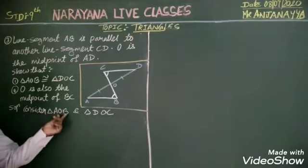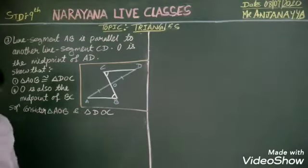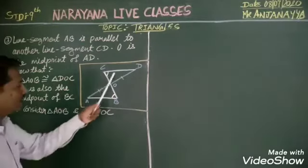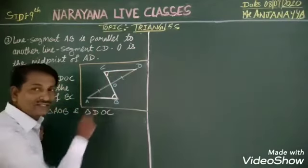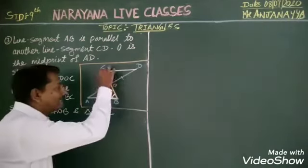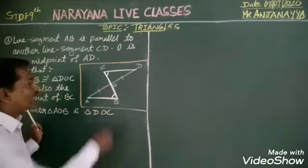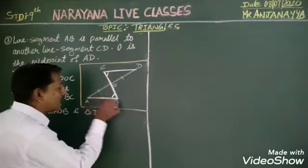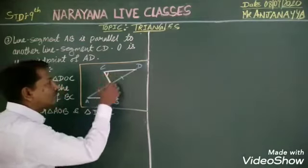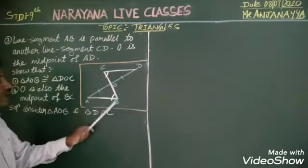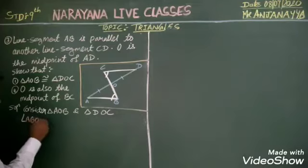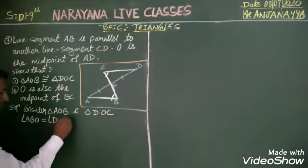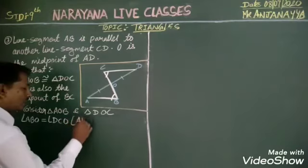I start with the proof. Consider triangle AOB and triangle DOC. Since AB and CD are parallel line segments, with BC as a transversal, angle ABO and angle DCO are alternate angles. So angle ABO is equal to angle DCO — alternate angles.